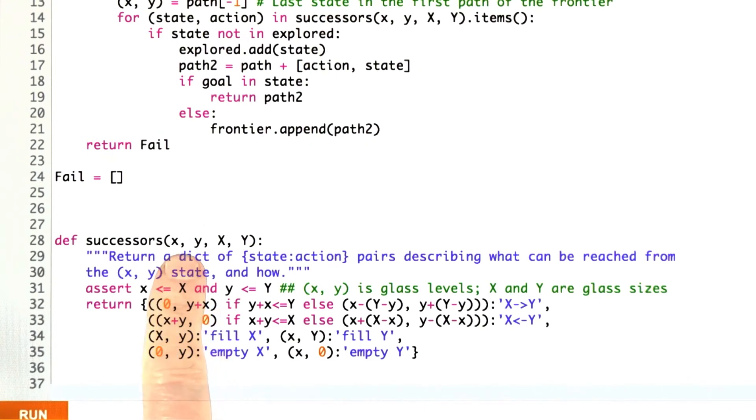Here's my successor function. It takes the current levels of the glasses and the maximum capacity of the glasses. What it's going to return is a dictionary of state action pairs. The state is just an xy pair of what are the levels of the glasses going to be, and the action is how you got there. We're just going to use strings to represent those actions, just something that we can print out that are otherwise unimportant in the operation of the program. First, I wanted to check that this is a legal state, that the fill level of x is less than its capacity and same for y. Then I said, here are the six possibilities.